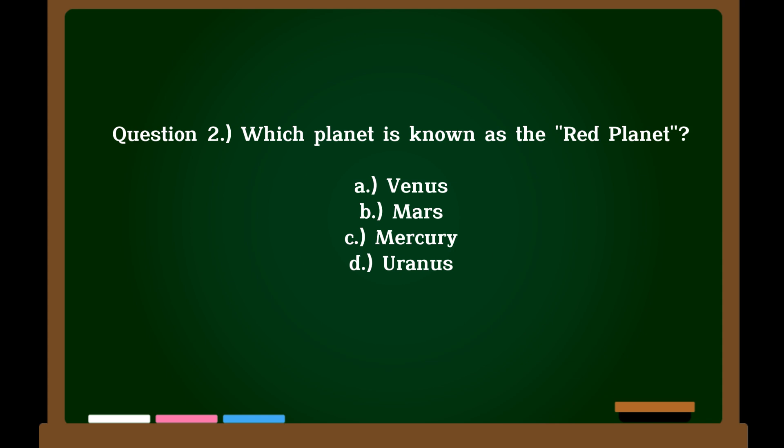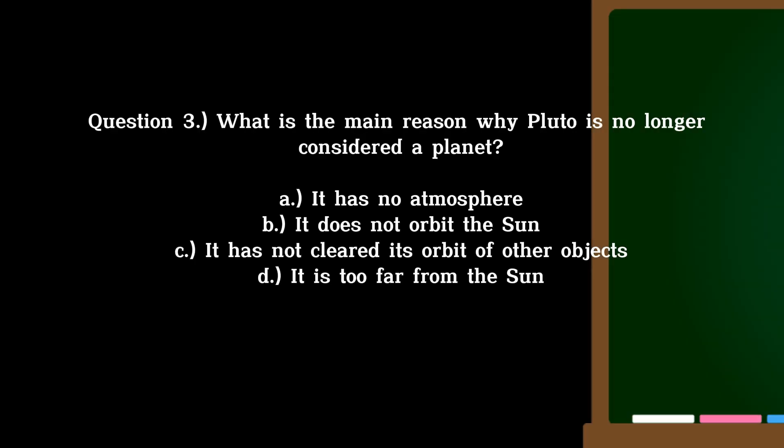Question 2. Which planet is known as the red planet? A. Venus, B. Mars, C. Mercury, D. Uranus. Correct answer: B. Mars.